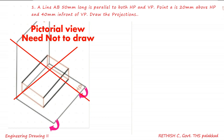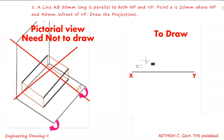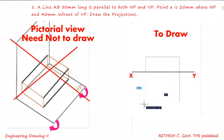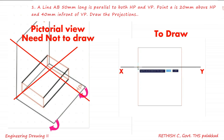This is the pictorial view and you do not need to draw it in your answer. For the projections, draw the XY line first. As the line is 20mm above HP, draw a perpendicular line with 20mm and also draw the 50mm long line — this is the front view. Then for the top view, as the line is 40mm below, draw a perpendicular line with 40mm and draw the top view of line AB. The projections are completed. Then do the dimensioning: 20mm, 40mm, and 50mm.